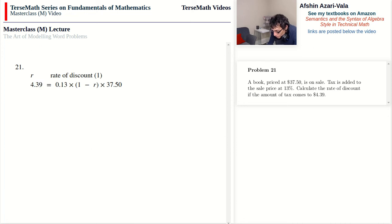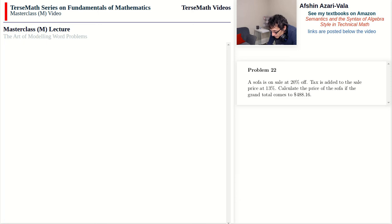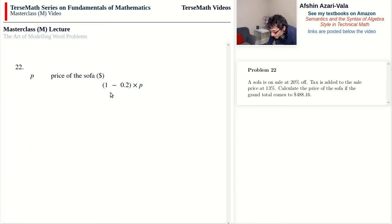Problem 22: a sofa is on sale at 20% off; taxes added at 13%. The grand total is $488.16. Calculate the price. With p being the price: first find the sale price — p × (1 − 0.20) — that's 80% of the original. Then for grand total multiply by 113%: p × (1 − 0.20) × (1 + 0.13) = 488.16.